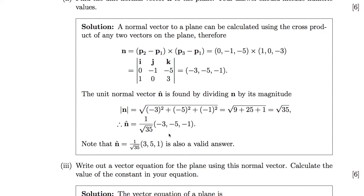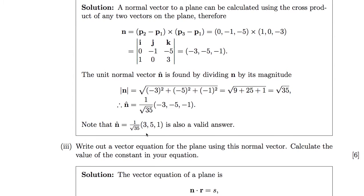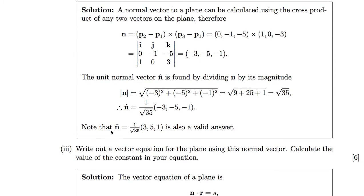You could express this as a decimal value; that would be perfectly valid. Also, a normal vector pointing in the opposite direction is also a valid answer — so instead of minus 3, minus 5 and minus 1, we could have 3, 5 and 1.